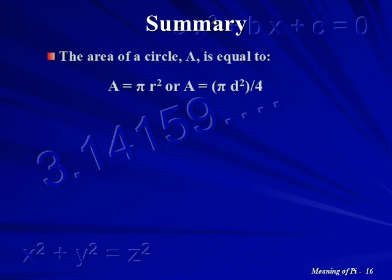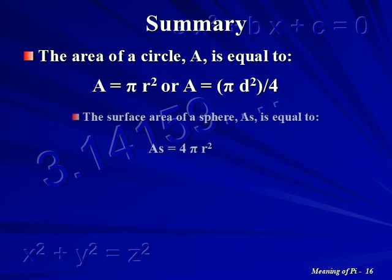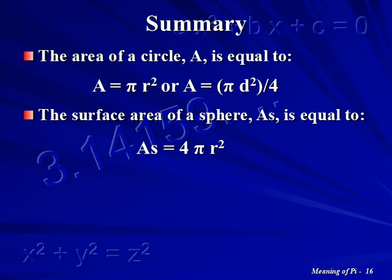The area of a circle, A, is equal to Pi times the radius squared. It can also be calculated by multiplying Pi times the diameter squared and dividing the product by 4. The surface area of a sphere, AS, is equal to 4 times Pi times the radius squared.